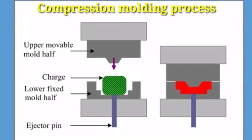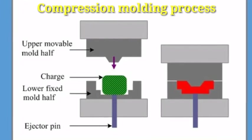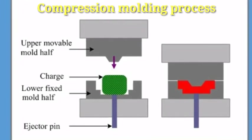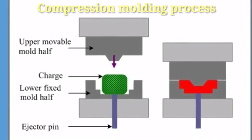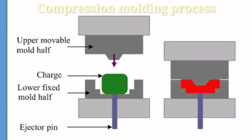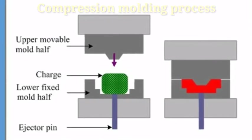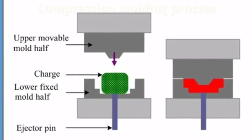Green color you can see that is the charge and lower fixed molding half. From the top you can see upper movable molding half and it pressures and ejector pin is there for ejection purpose. And in this image you can see the red color that material becomes compressed.